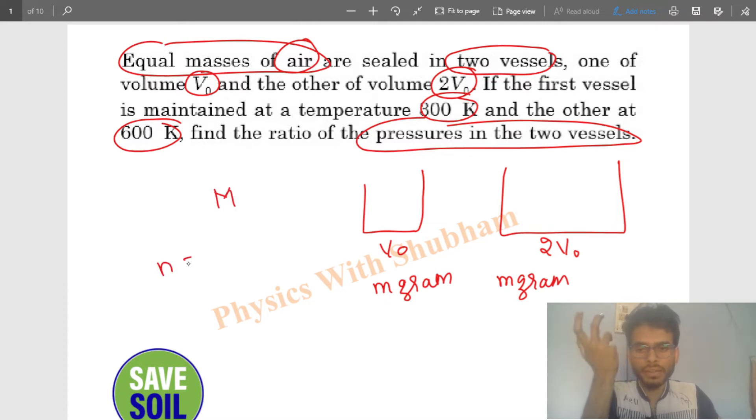The number of moles will be simply small m divided by capital M. Small m is the mass of the gas and capital M is the molar mass of the gas. So this gives you the number of moles. You can see the number of moles in both vessels is the same, so let's say small n number of moles in both vessels.